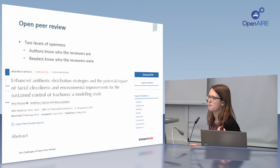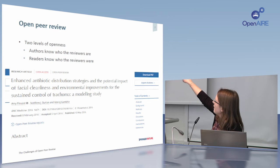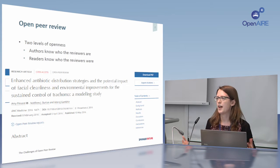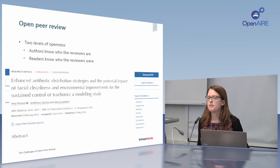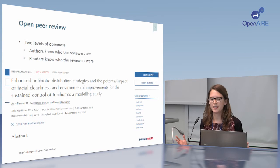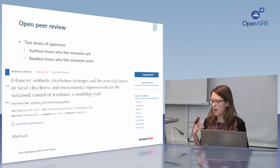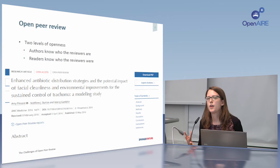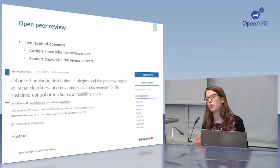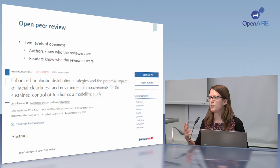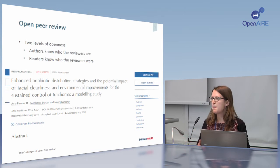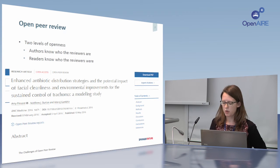I've picked an example of an article published with open peer review — you can see a link to the open peer review report which you can click on and read. We have the BMC series, which spans medicine and biology, with approximately 60 journals. About 40 of those are medical titles, and all of them have operated on an open peer review model since they were launched — some for 15 years — so we feel it's quite an established model.